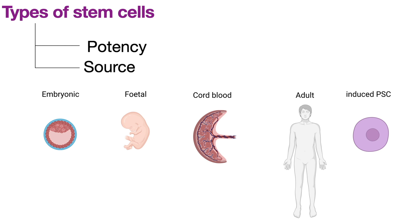Cord blood stem cells are derived from the umbilical cord blood after an organism is born. These are easy to isolate and readily available. Cord blood is also known to be abundant in hematopoietic stem cells and mesenchymal stem cells, and the collection method is non-invasive, hence the ethical issues are much less.